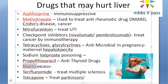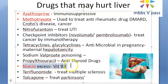Propylthiouracil, an antithyroid drug, can cause hepatotoxicity. Niacin is a vitamin — vitamin B3 — and excess intake can lead to hepatotoxicity. So don't think vitamins are harmless like chocolates; make sure children don't swallow excessive amounts thinking they are yummy, because excess niacin can be scary.